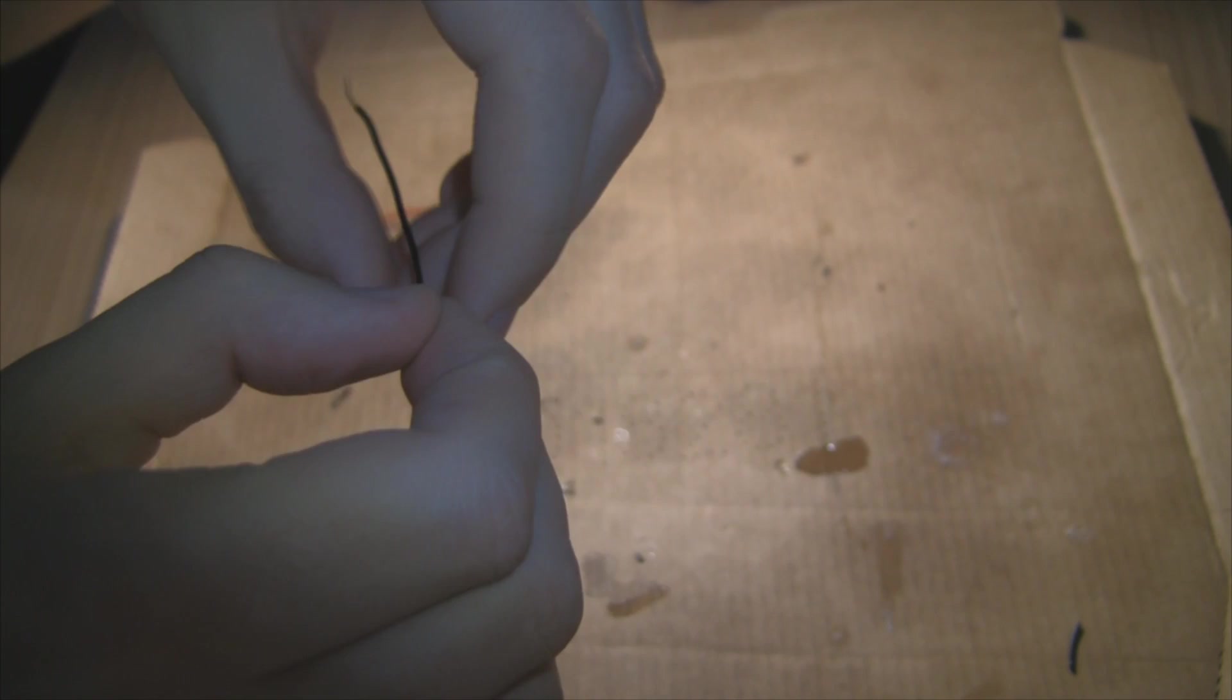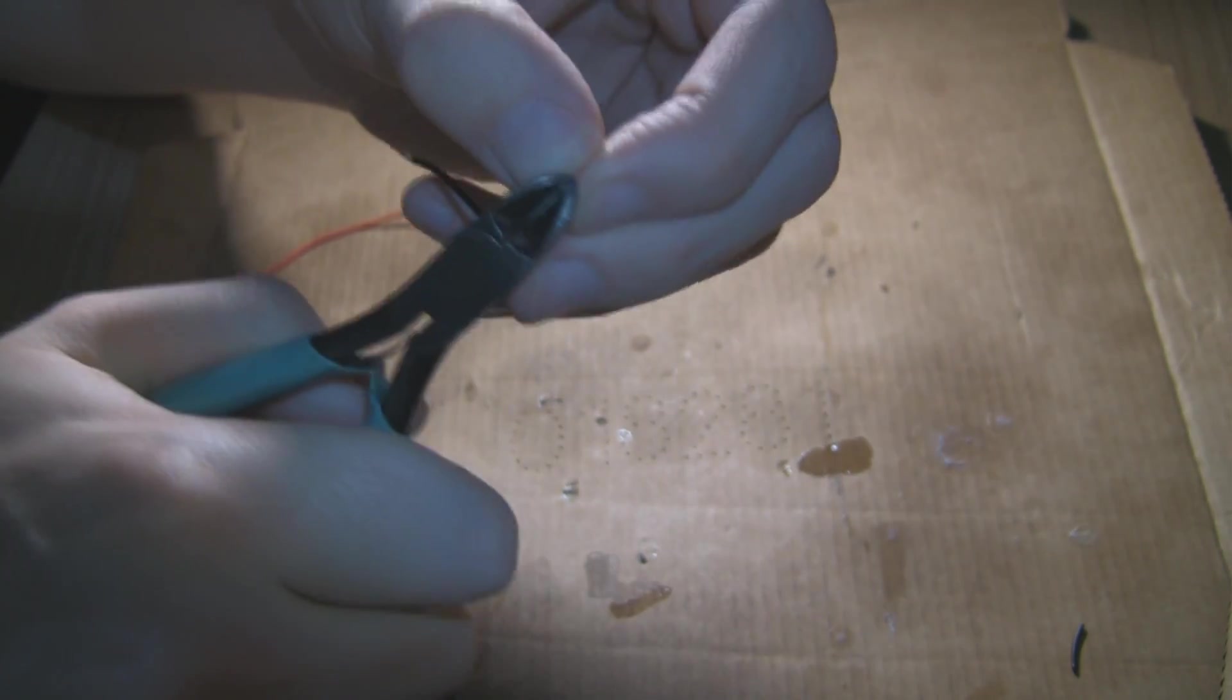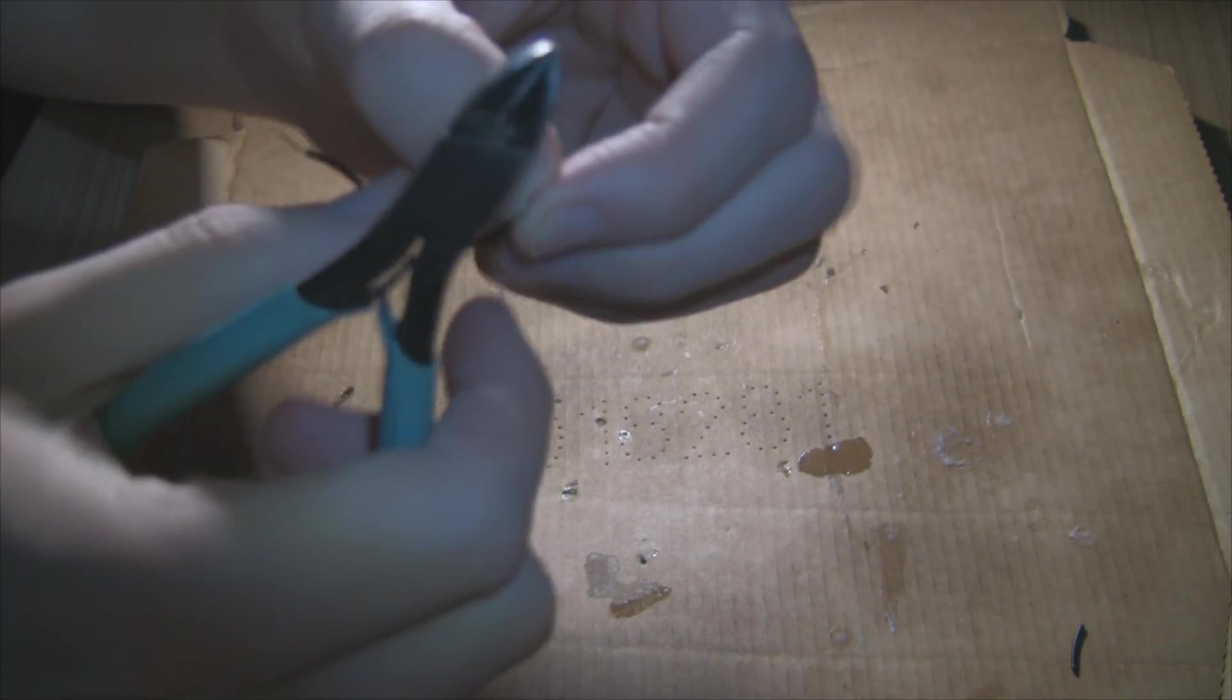Note there is a little bit of excess on the outside where the end of the loop was. You want to take some wire cutters and just remove that. This is just to avoid shorting out the laser diode.